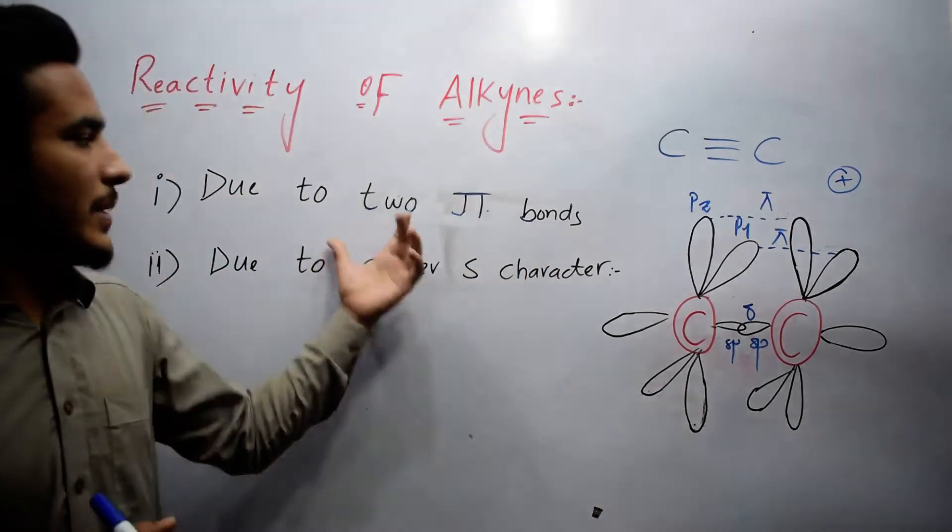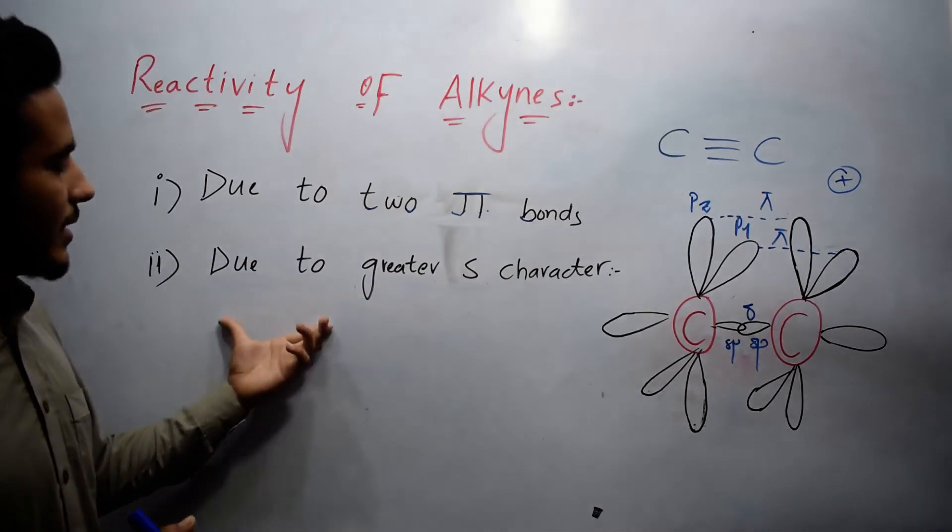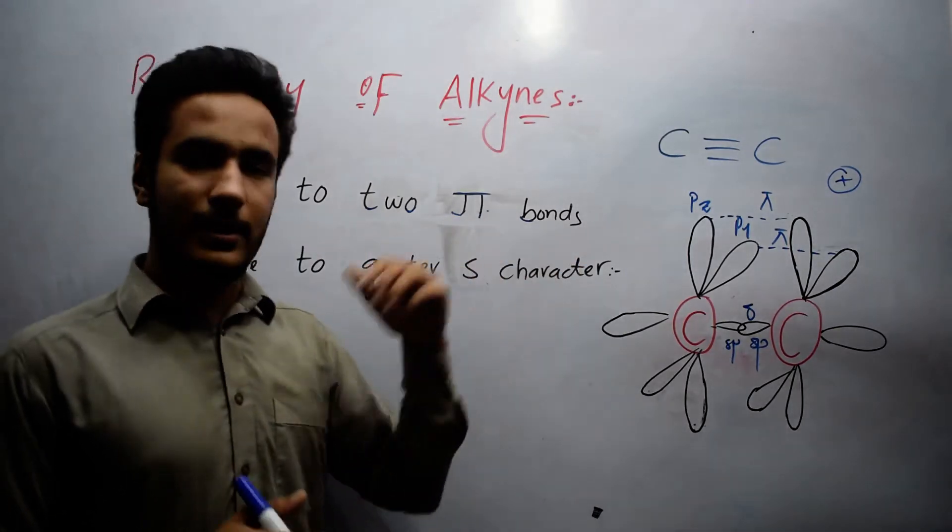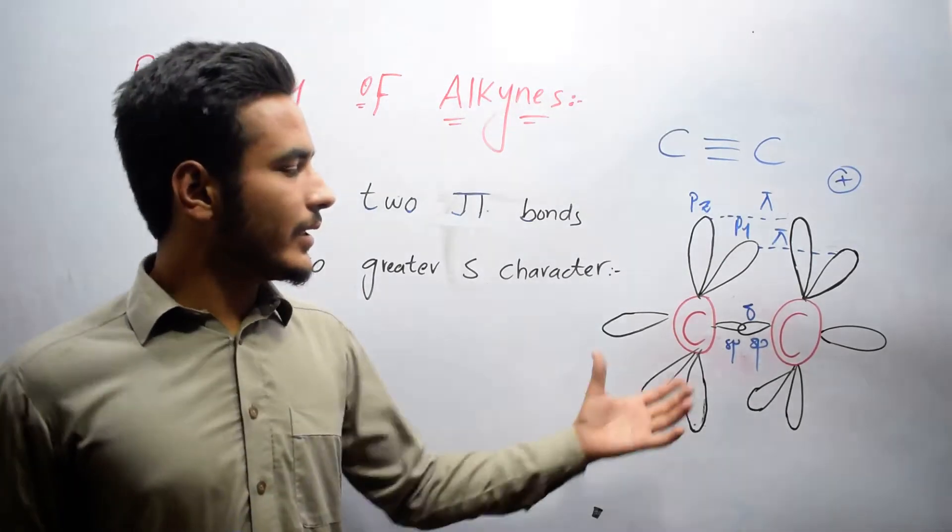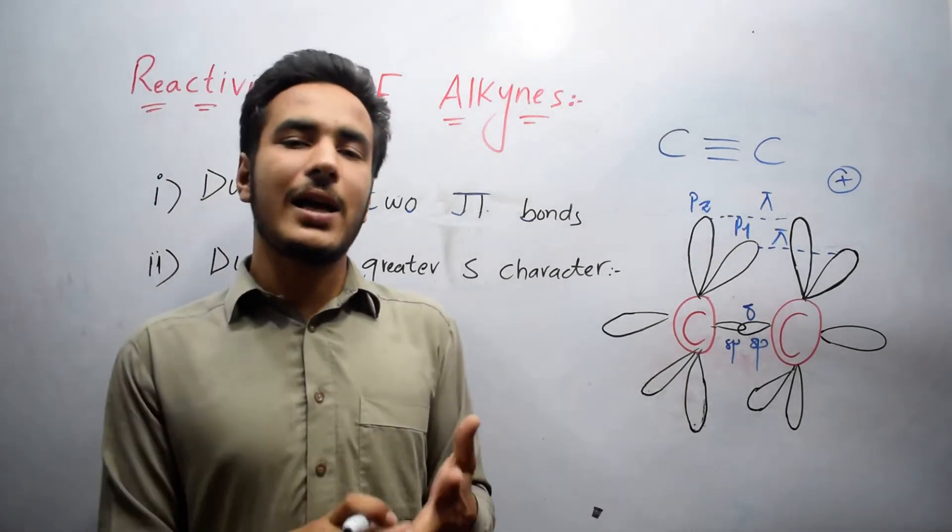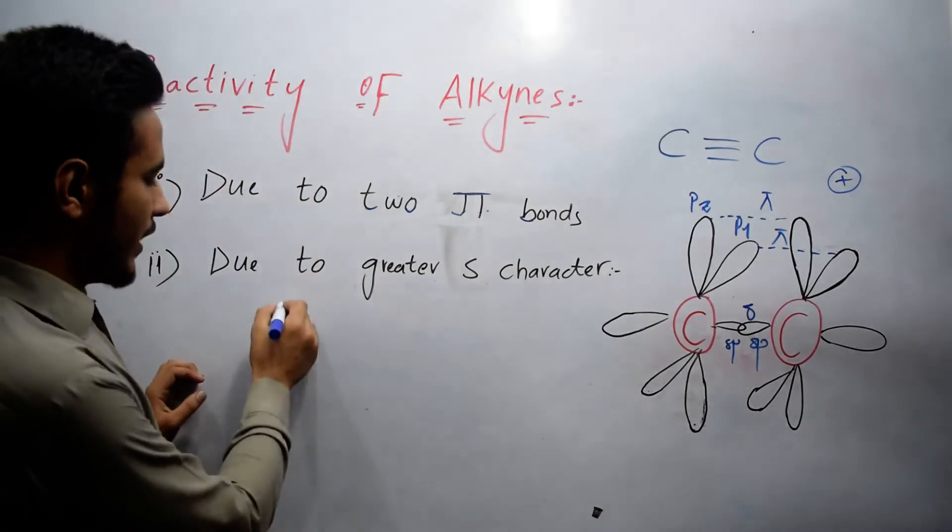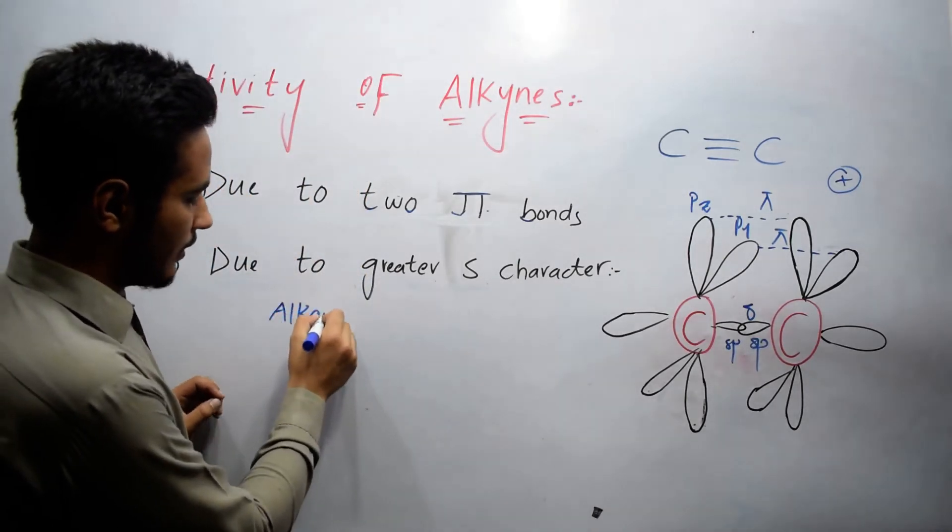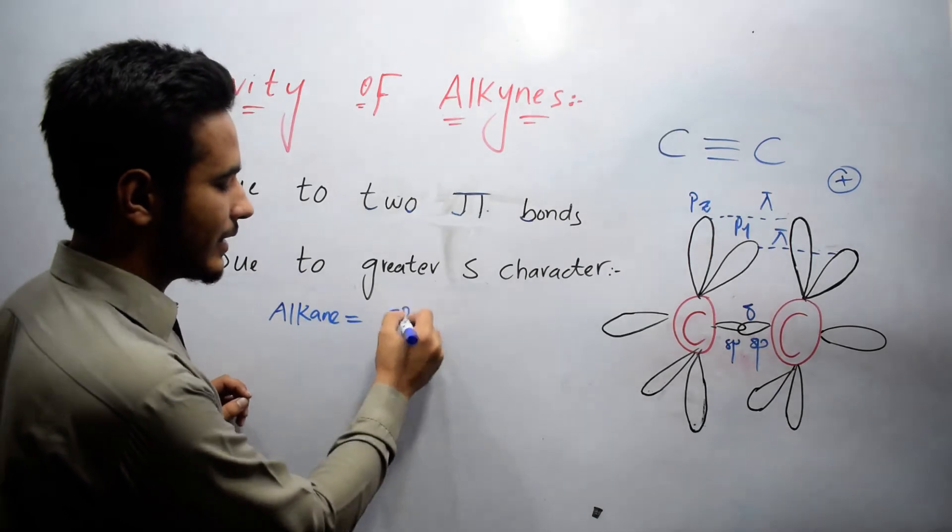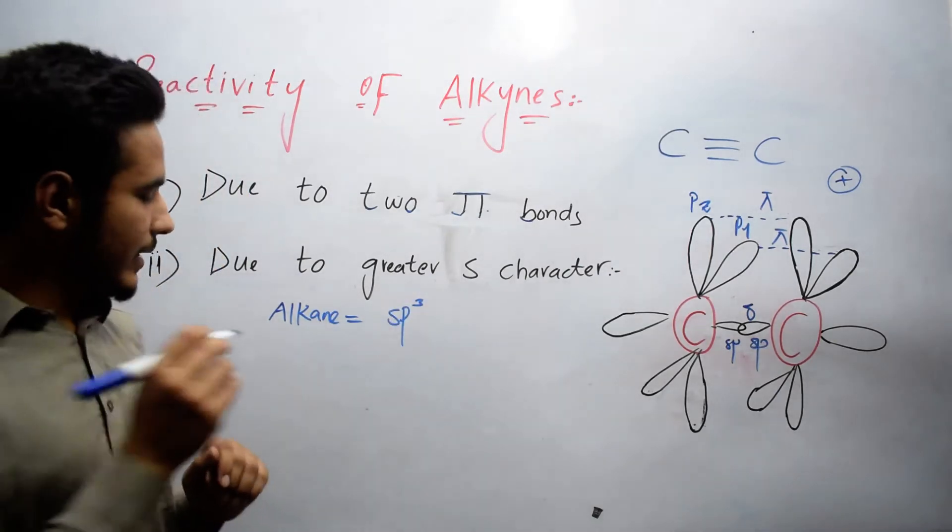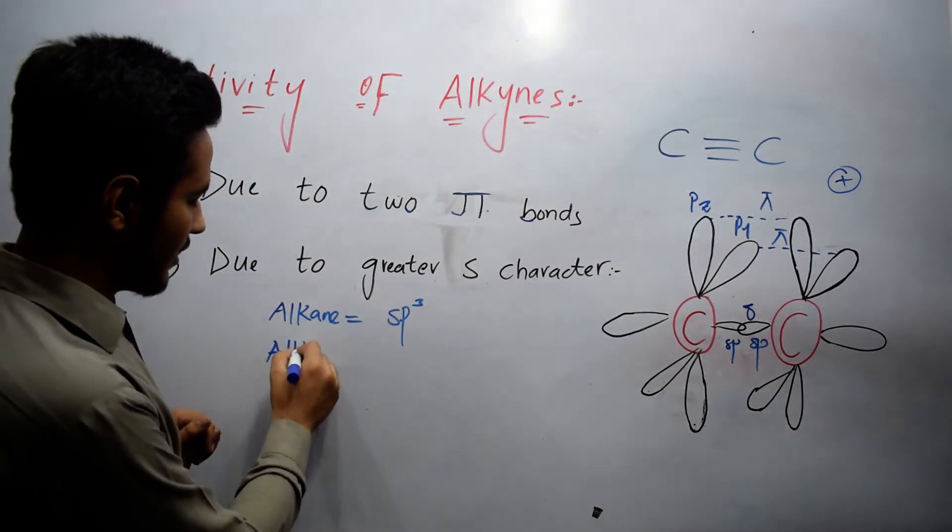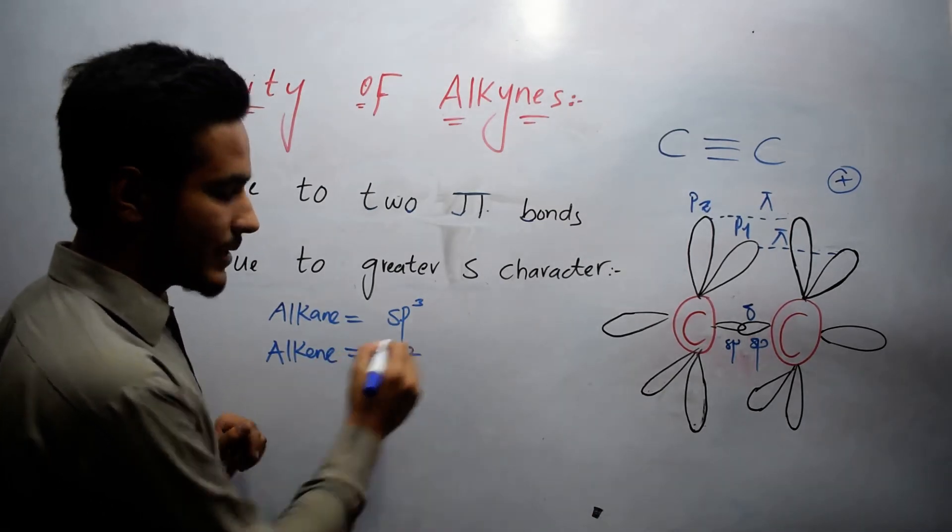This was the first reason. The second reason is due to greater s character. We know that in case of alkynes, sp hybridization takes place. In case of alkanes, sp3 hybridization takes place. In case of alkenes, sp2 hybridization takes place.